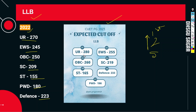So in 2022, the LLB cutoff was: UR 270, EWS 245, OBC 250, SC 209, ST 155, PWD 180, and Defense 223.